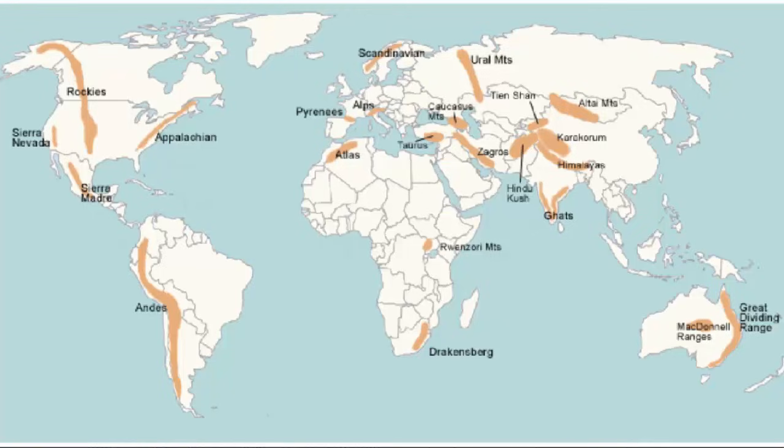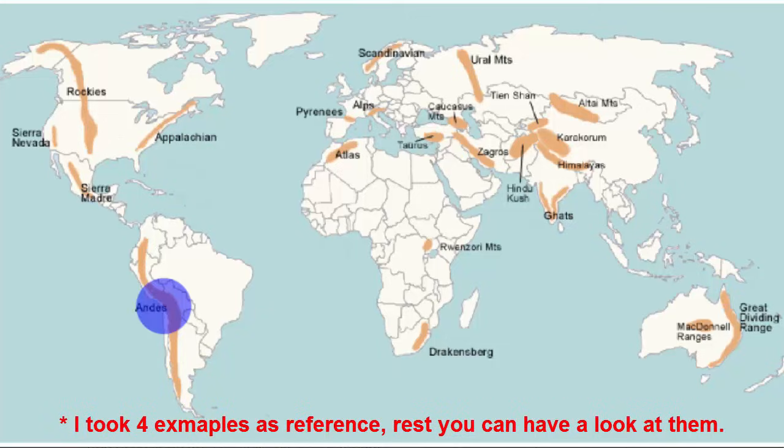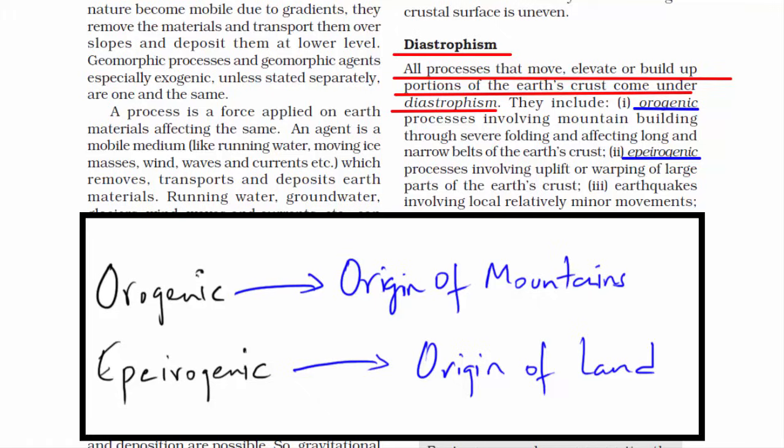Now let me show a few places on earth where this kind of mountain building process took place. You'll find long mountain ranges in all these places. Here we have the Andes, then here is the Himalayas, then here are the Ural Mountains. This part is known as the Rocky Mountains of Western United States. So always remember, orogenic is a mountain building movement and epeirogenic is a land forming movement.